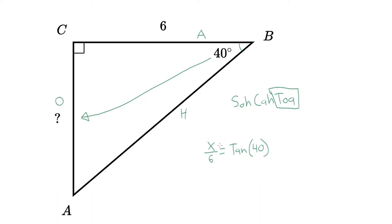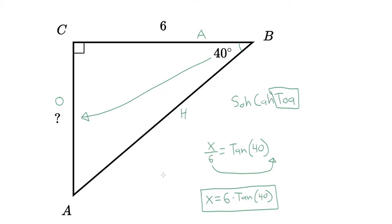We're trying to solve for X. To separate X from 6, we grab the 6 and multiply it over. So X equals 6 times the tangent of 40. That's your clean answer. If you round to the nearest hundredth, you get X equals 5.03. That is your answer — this question mark equals 5.03.